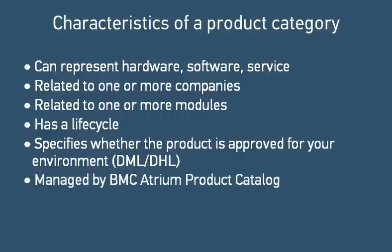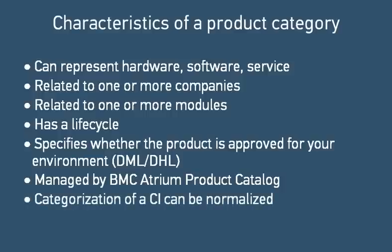Product categories are managed by the BMC Atrium product catalog, which serves as a reference for other applications. For example, if you create a CI whose categorization is incorrect, BMC Atrium CMDB can correct the CI by applying the categorization values for that product from the product catalog. This process is called normalization.